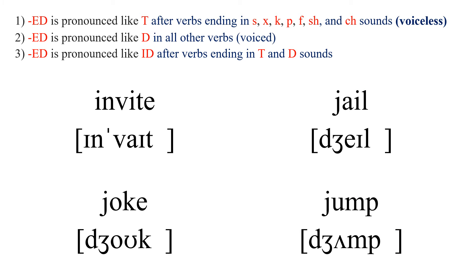Next one: INVITE. This is an E ending, so we just add D. And then this T is one of those special endings, so we put ID. Read: INVITED. Stress on the second syllable: INVITED.